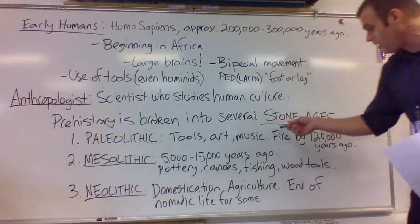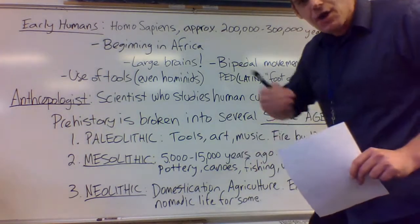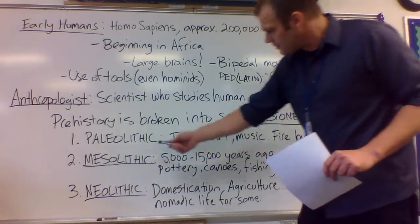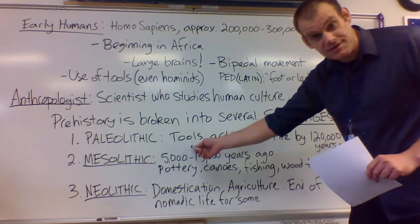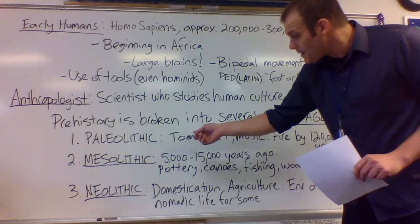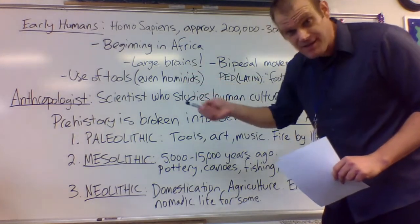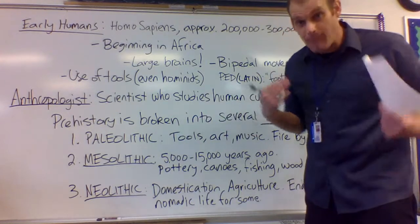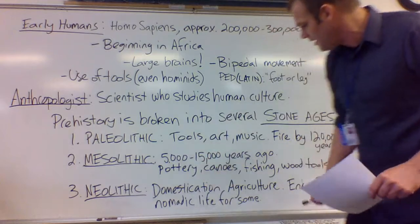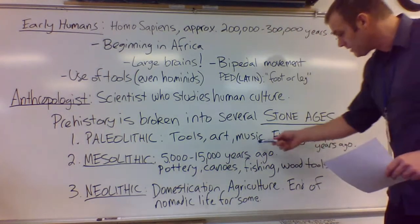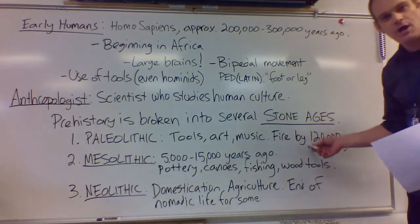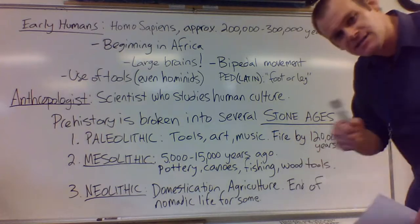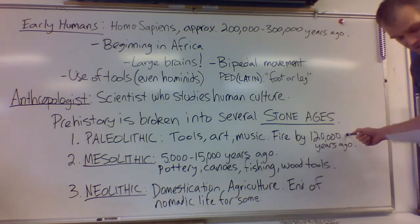Prehistory is broken into several stone ages, and we went over those throughout the week. Let's do a quick review. We have the Paleolithic — this means the old stone age, the oldest one. Characteristics of this stone age include the use of tools. The Paleolithic also includes those hominids using tools before the emergence of Homo sapiens — some of our ancestors that aren't even technically modern humans are participating in this stone age. They're making tools, making art for the first time, making music. We also have the control of fire — used to warm people, bring light, and possibly cook food — by about 120,000 years ago.